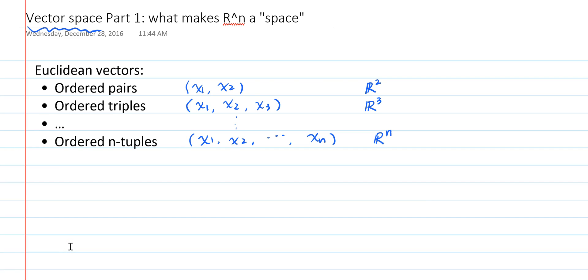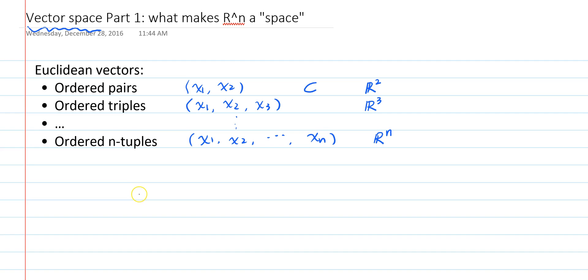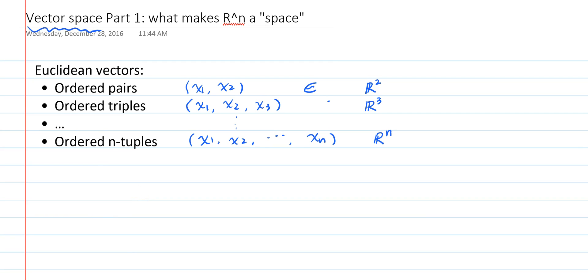So, using set theory notations, any ordered pair of real numbers is an element of the set R^2, any ordered triple of real numbers is an element of the set R^3, and any ordered n-tuple of real numbers is an element of the set R^n.